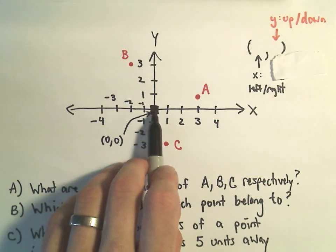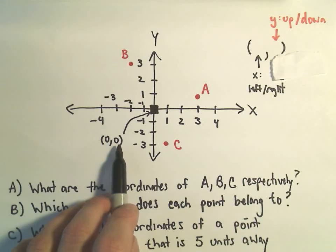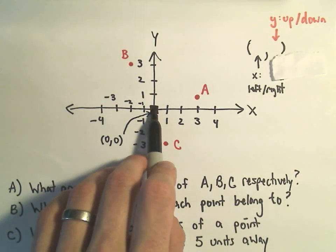It's kind of like a reference point, so it makes sense this should be 0, 0, because we don't move anywhere left or right. We don't go anywhere up or down. So this point right at the intersection would be the point 0, 0.